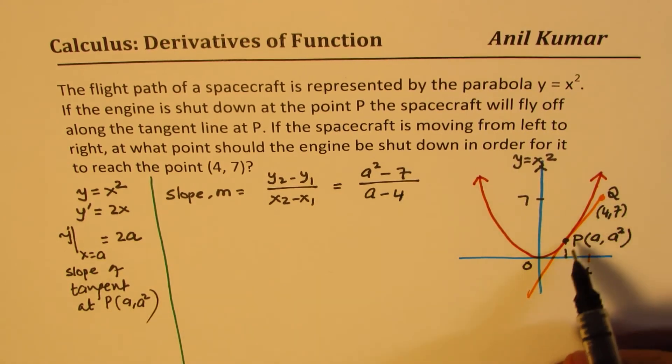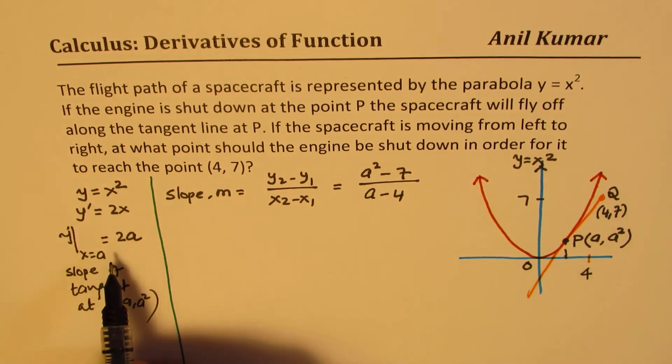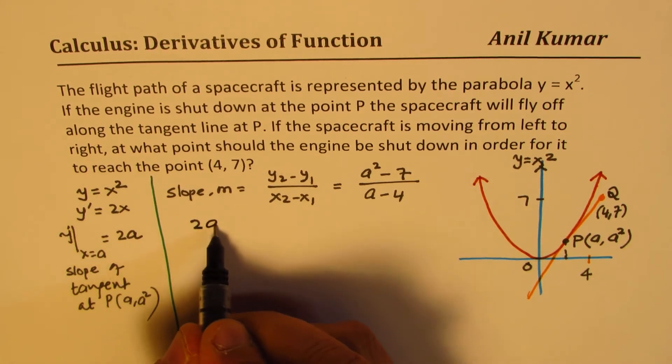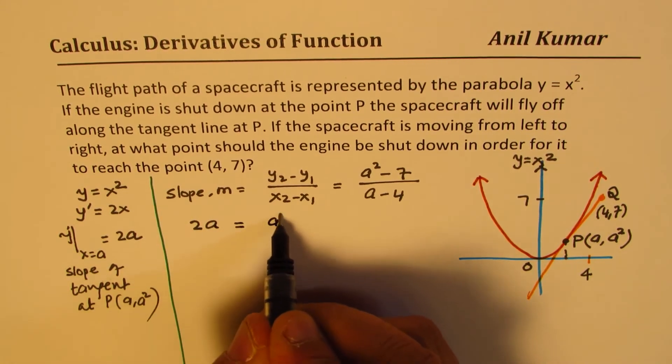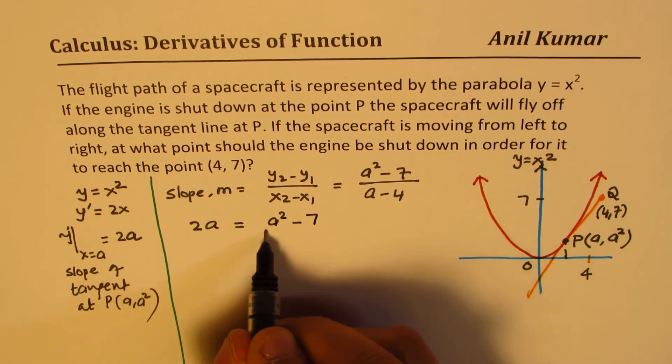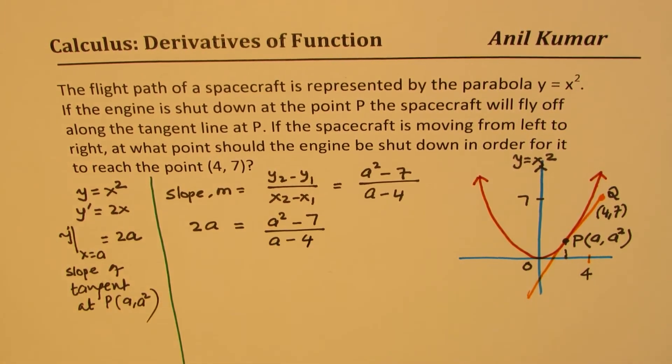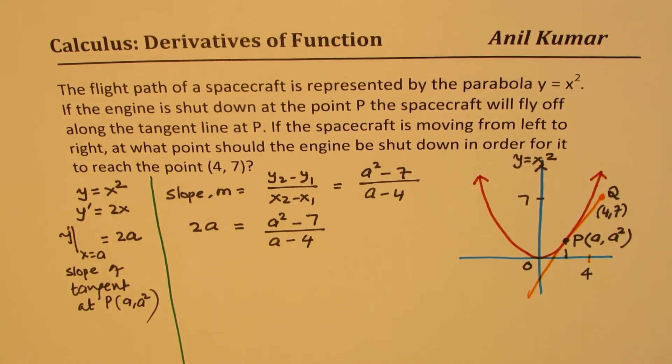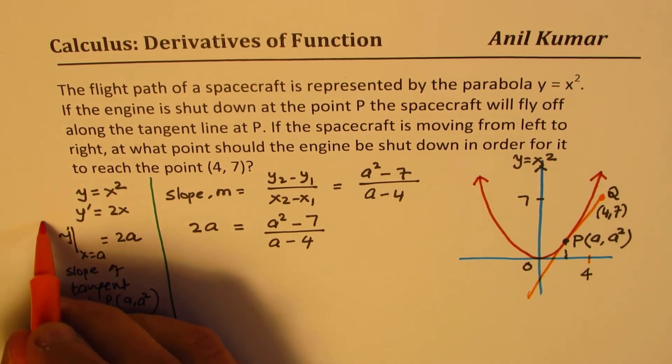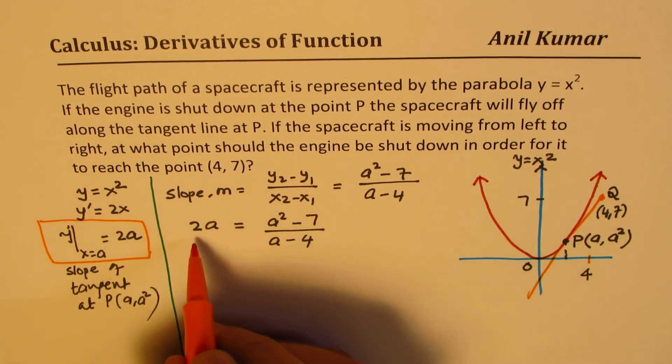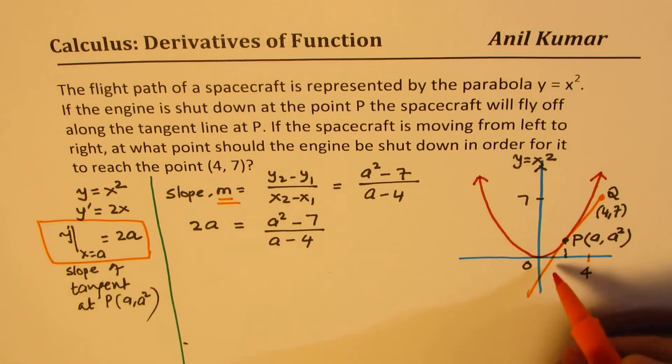Now, this slope is the slope of the tangent line, which we have already worked out, is 2a. So we get an equation, which is 2a equals a squared minus 7 over a minus 4. Since this slope 2a should be your slope M, it is the same line.